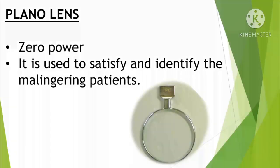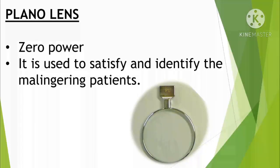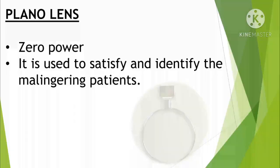The Plano lens consists of zero power lenses, which are used for malingering patients. In the OPD, there are some patients whose vision is 6/6 with no refractive error, but when asked to read without a lens they claim they cannot see clearly. In such cases, we give a Plano lens, and when zero power lenses are used, they will show clear vision. So we use Plano lenses for malingering patients.